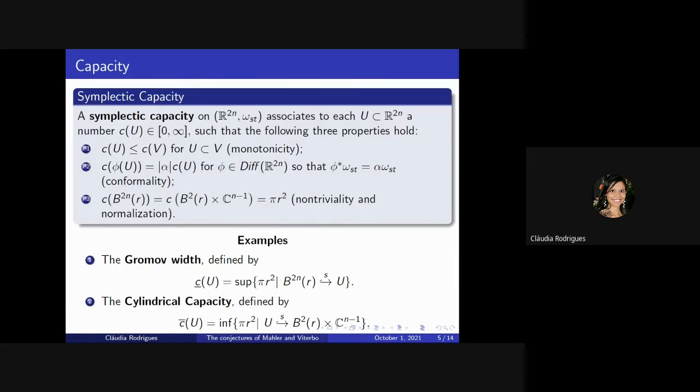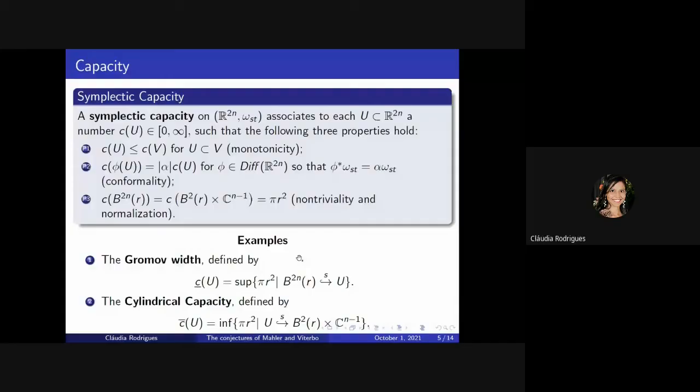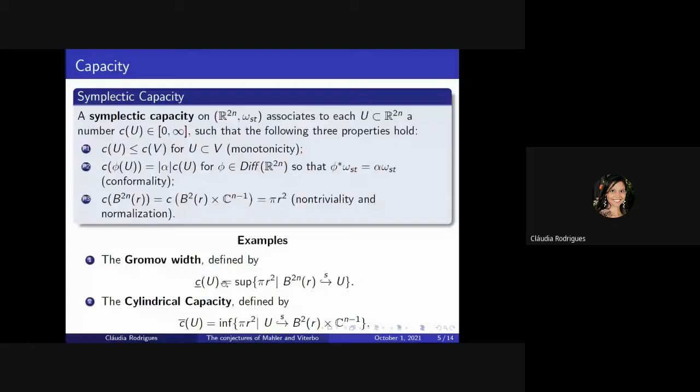These two next examples show that there exists a capacity and that it's not unique. The Gromov width defined by T underline U is equal to supremum of pi R squared, ball of two dimensions and radius R. This is a good answer, symplectic embedding in symplectic cylinder of radius R.